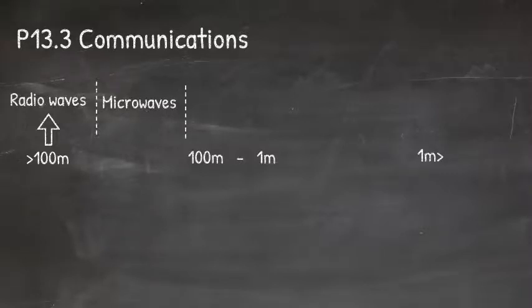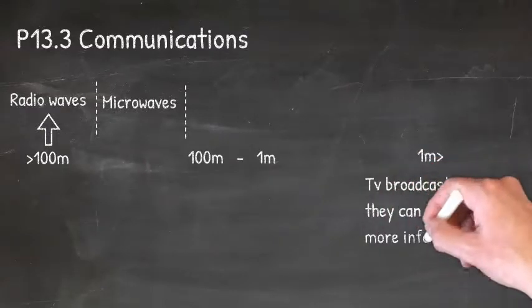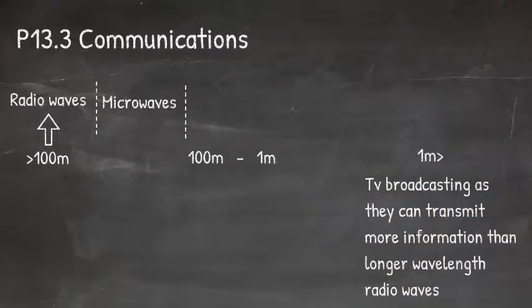Each radio band is used for a different purpose. For radio waves with a wavelength of less than one meter, it is used for TV broadcasting as they can transmit more information than the longer wavelength radio waves.